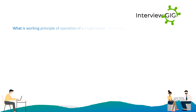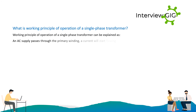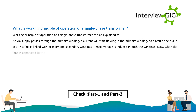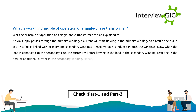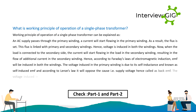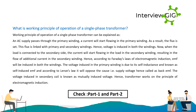What is the working principle of a single phase transformer? When an AC supply passes through the primary winding, a current starts flowing in the primary winding. As a result, flux is set up, which is linked with both primary and secondary windings, and hence voltage is induced in both windings. When a load is connected to the secondary side, current starts flowing in the load and in the secondary winding, resulting in additional current in the secondary. According to Faraday's laws of electromagnetic induction, EMF is induced in both windings. The voltage induced in the primary winding is due to its self-inductance and is known as self-induced EMF, which according to Lenz's law opposes the supply voltage and is called back EMF. The voltage induced in the secondary coil is known as mutually induced voltage. Hence, a transformer works on the principle of electromagnetic induction.